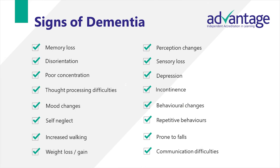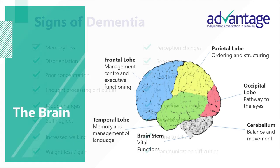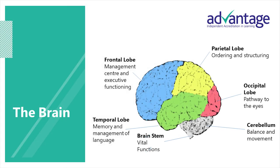So what are the signs of dementia? Again there are multiple signs. They could be memory loss, disorientation, poor concentration, thought processing difficulties, mood changes, self-neglect, increased walking, weight loss or weight gain, perception changes, sensory loss, depression, incontinence, behavioural changes, repetitive behaviours, being prone to falls, or communication difficulties.